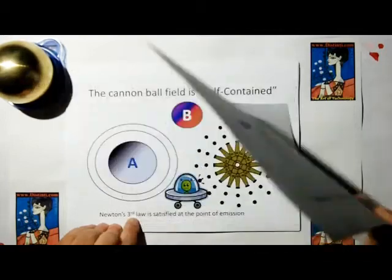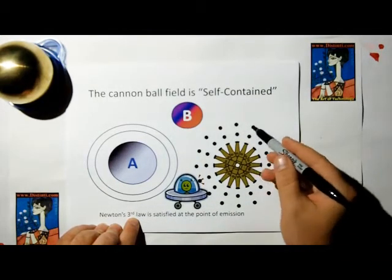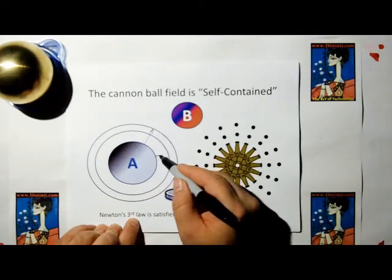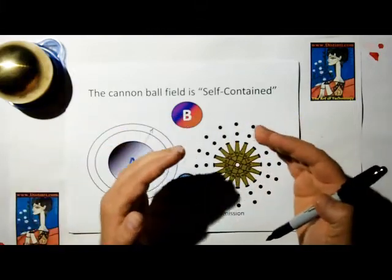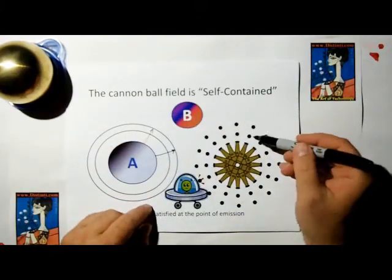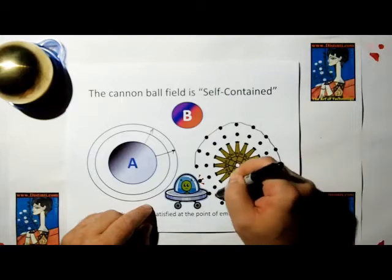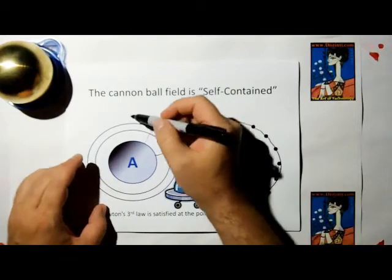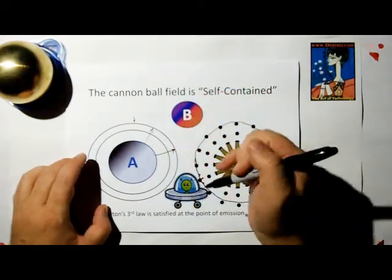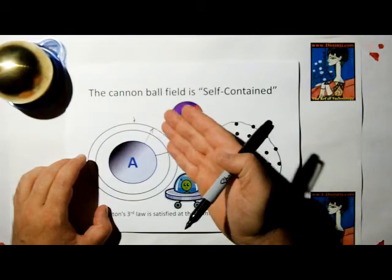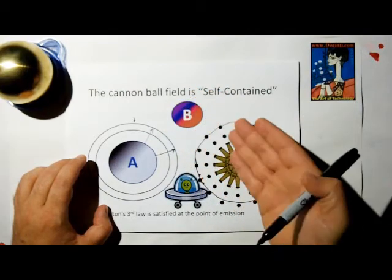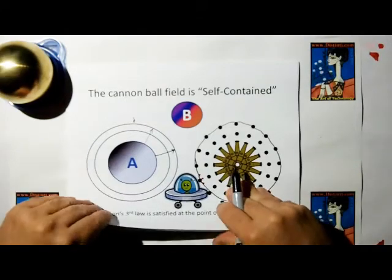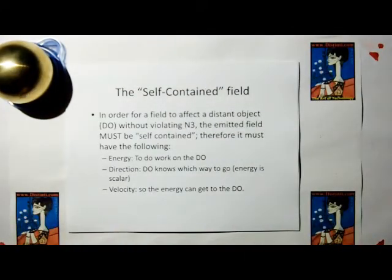So let's theorize about a cannonball field. Just like a gravitational field has gravity waves going out, you could have a cannonball field that is self-contained, meaning that each wave of cannonballs has everything it needs to do to affect whatever distant objects those waves hit. And I'm going to show that's the same thing with gravity waves. Therefore, there does not have to be an equal and opposite reaction when those gravity waves hit object B or when those cannonball waves hit object B or the aliens or whatnot.